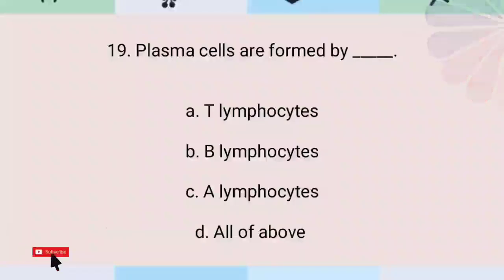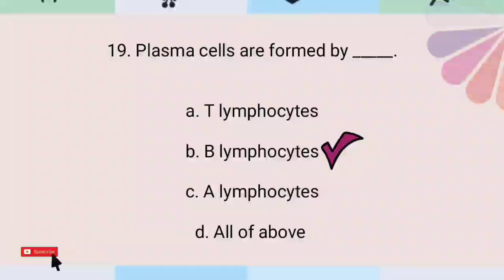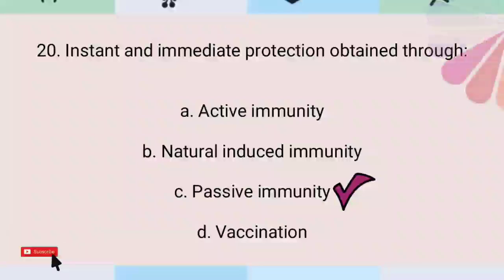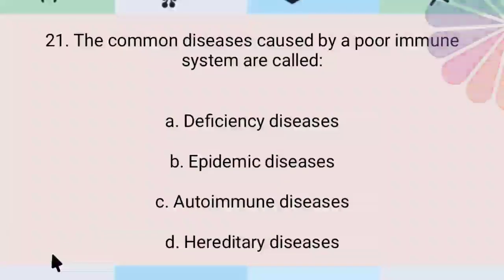Plasma cells are formed by B lymphocytes. Instant and immediate protection is obtained through passive immunity. The common diseases caused by a poor immune system are called epidemic diseases.